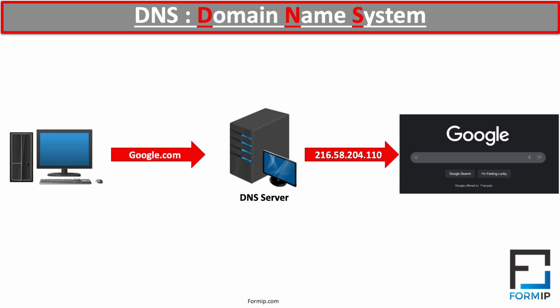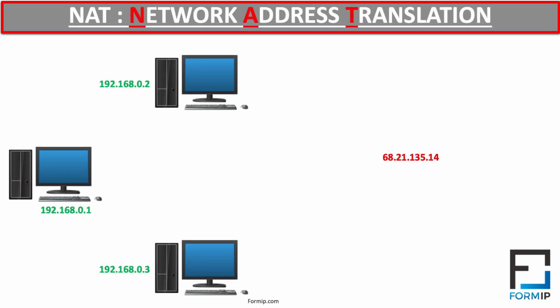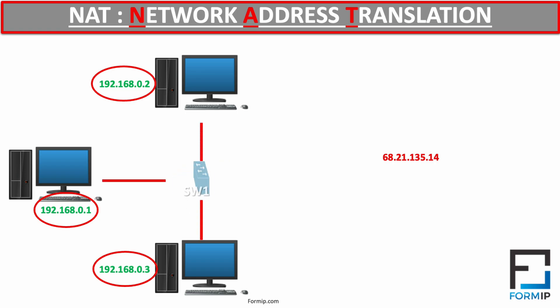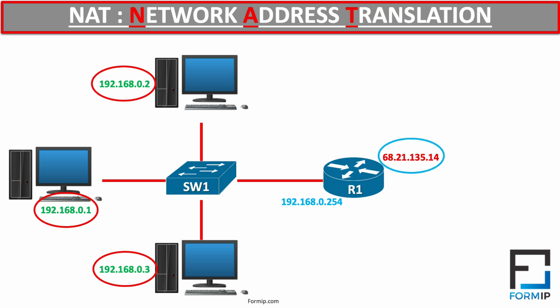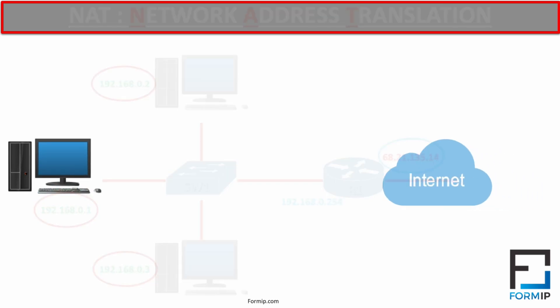We will now talk about NAT, Network Address Translation, which allows you to translate a set of IP addresses into another set of IP addresses. NAT is generally used on routers. For example, here we have a small private network consisting of three computers which uses a set of private IP addresses. Remember, these addresses are not routable on the internet. These three PCs are connected to a switch, and the switch is connected to the router with its public address. The router will take care of the address translation — if one of the PCs wishes to communicate with the internet, its private address will be translated to the public address of the router.